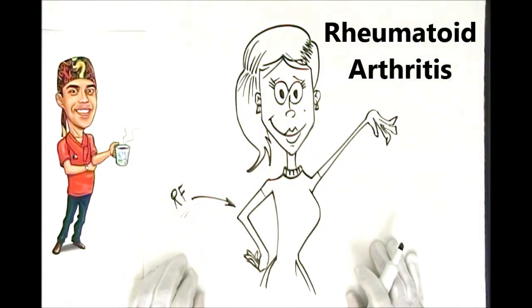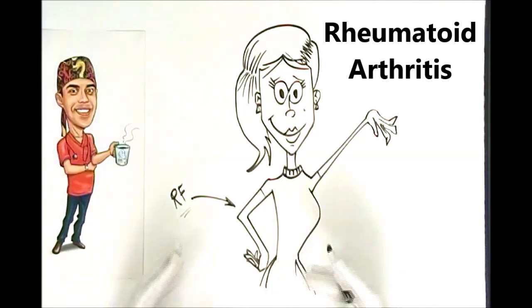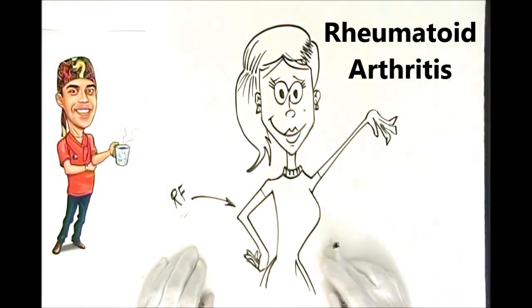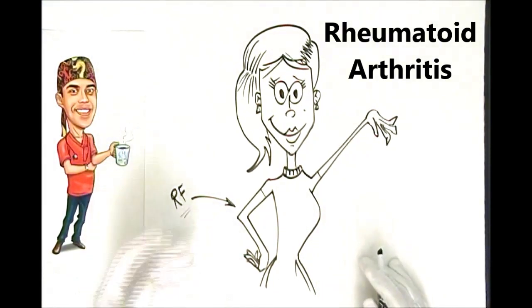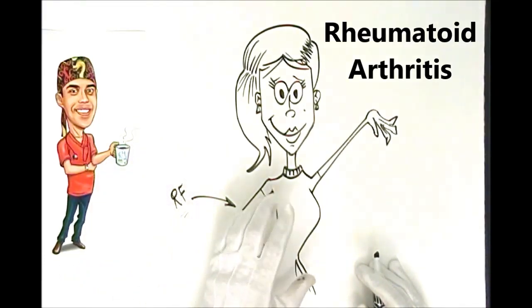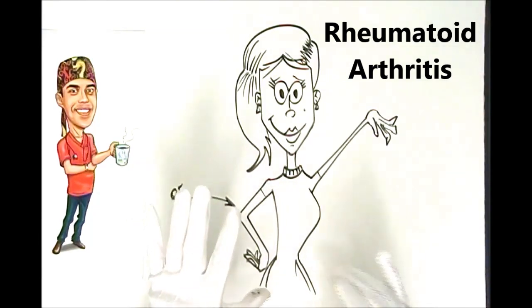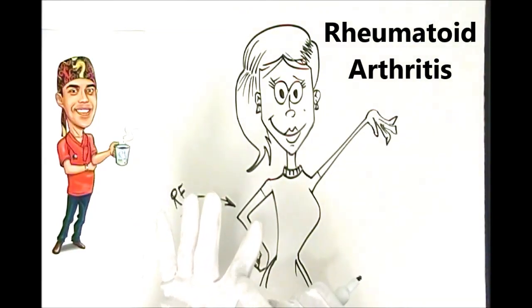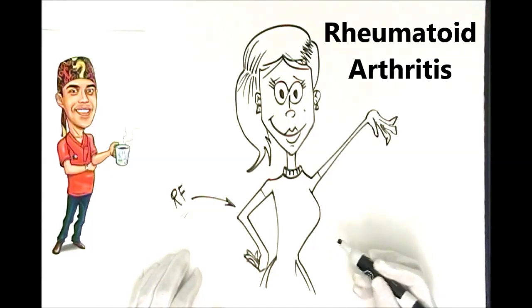Sometimes it can be tricky to figure out with your first episode if it's just ordinary, did you just sprain your hand, or is it your first gout attack, or is it just ordinary arthritis. Typically if you're not sure and you do notice that the joints are not just swollen and sore, which would be typical for arthritis, but they're actually also red and hot and swollen, you should actually go and see your family doctor to get checked.